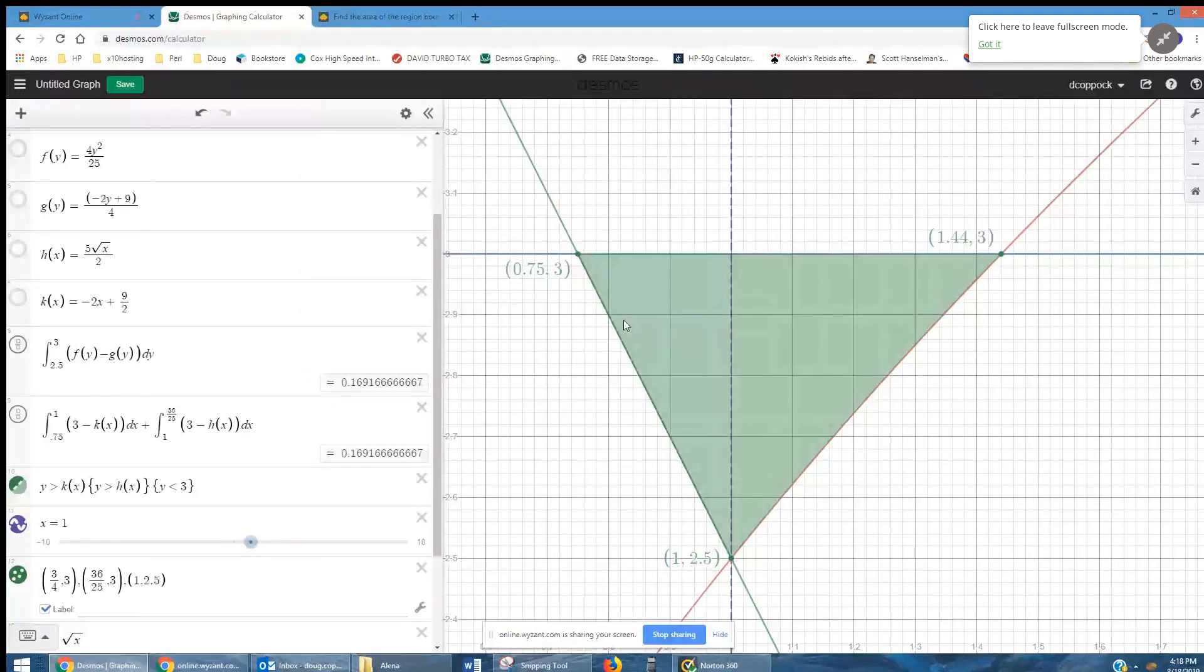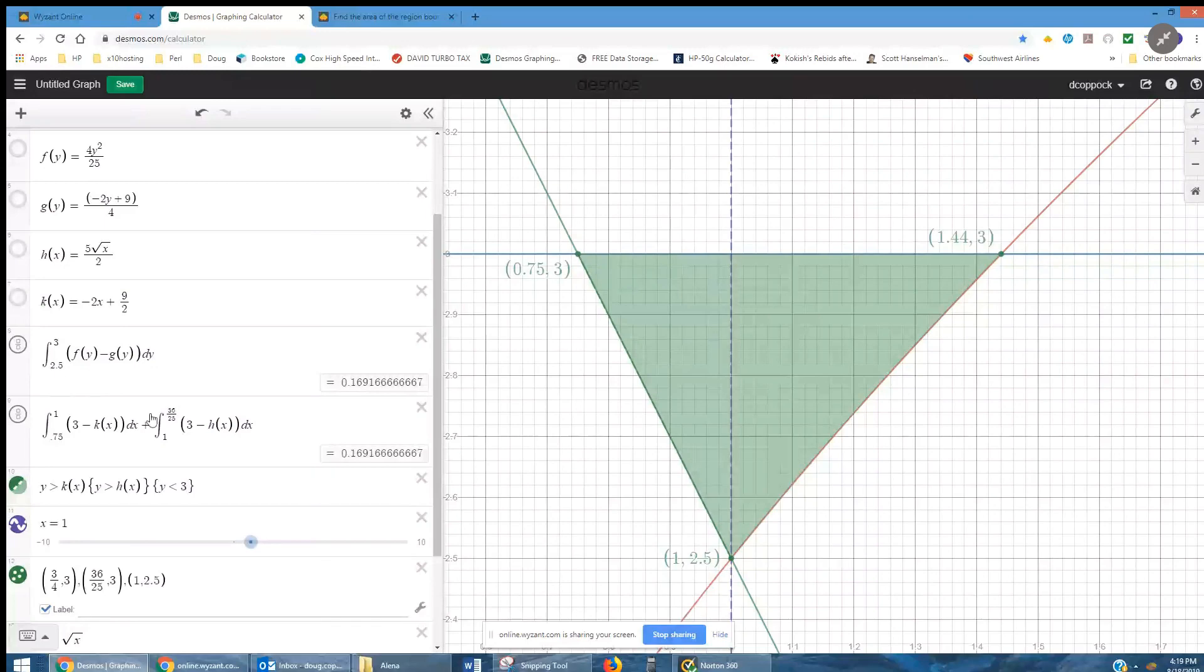There is the region again. And here I've actually written the integrals using the Desmos Online Graphing Calculator. With respect to y, we're going from 2.5 up to 3, and it's right minus left. F of y is I solve that first equation for x in terms of y. That means for every y value between 2.5 and 3,